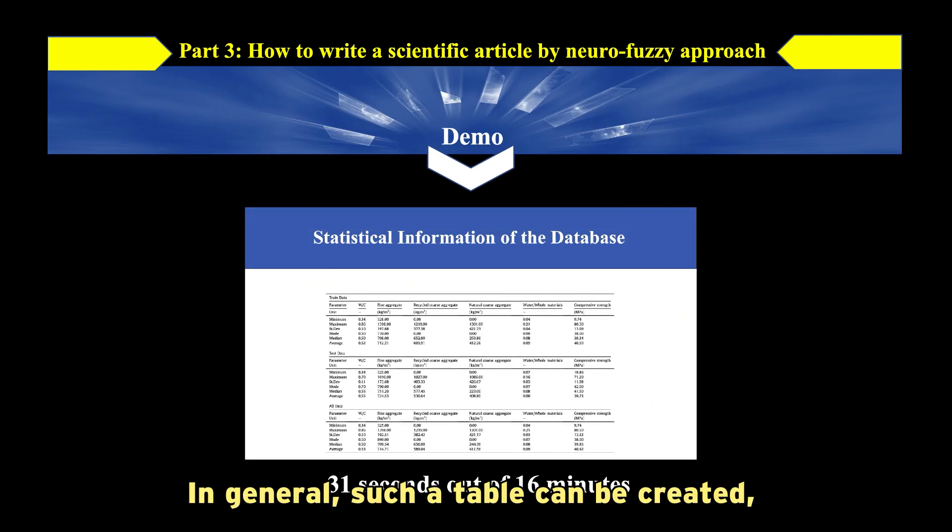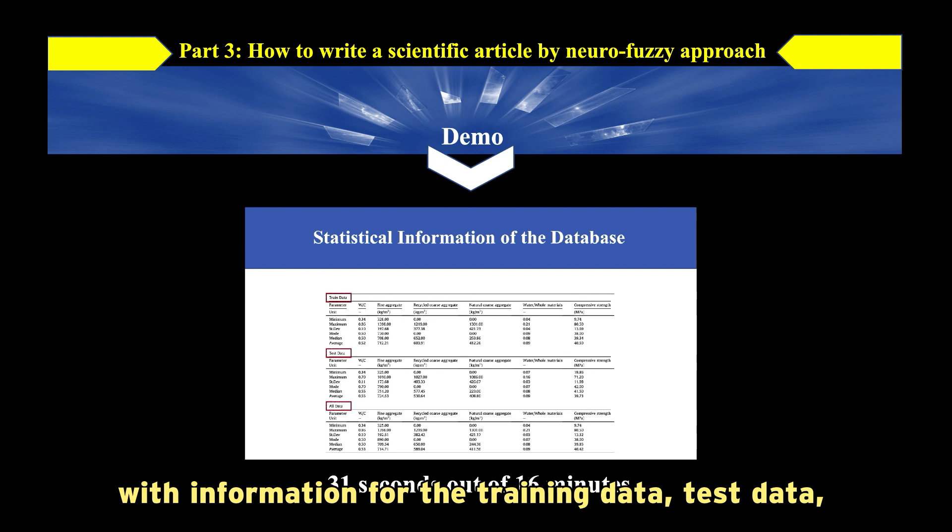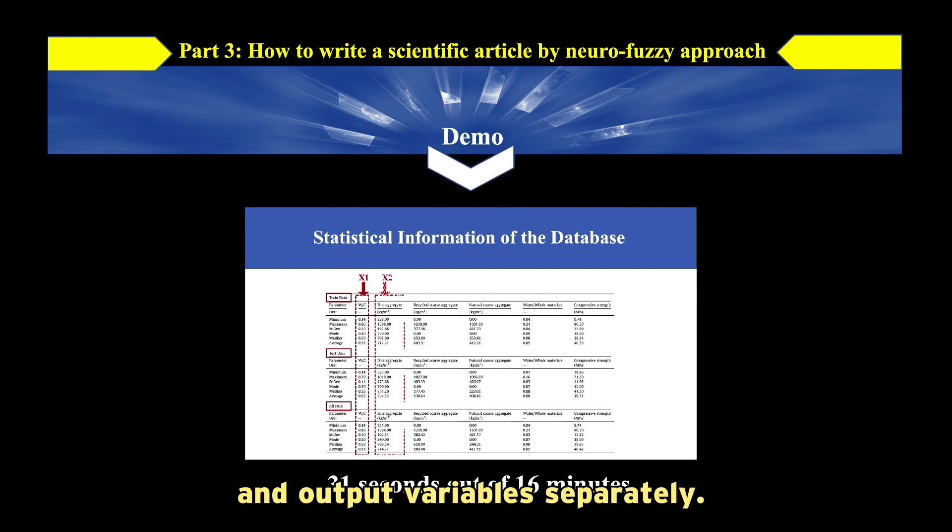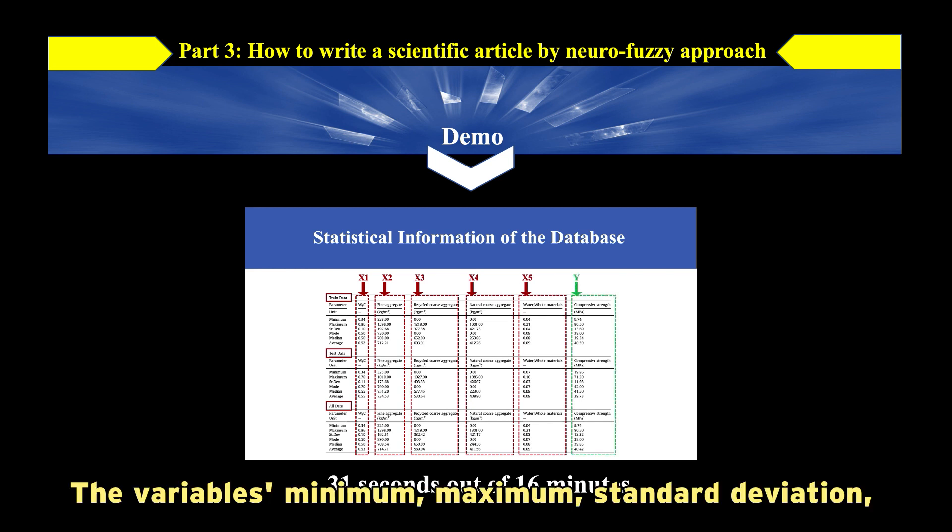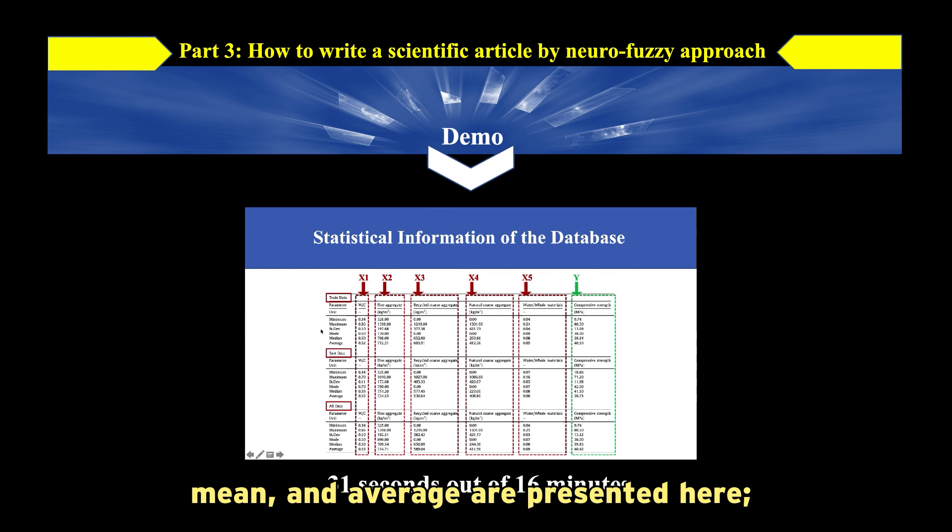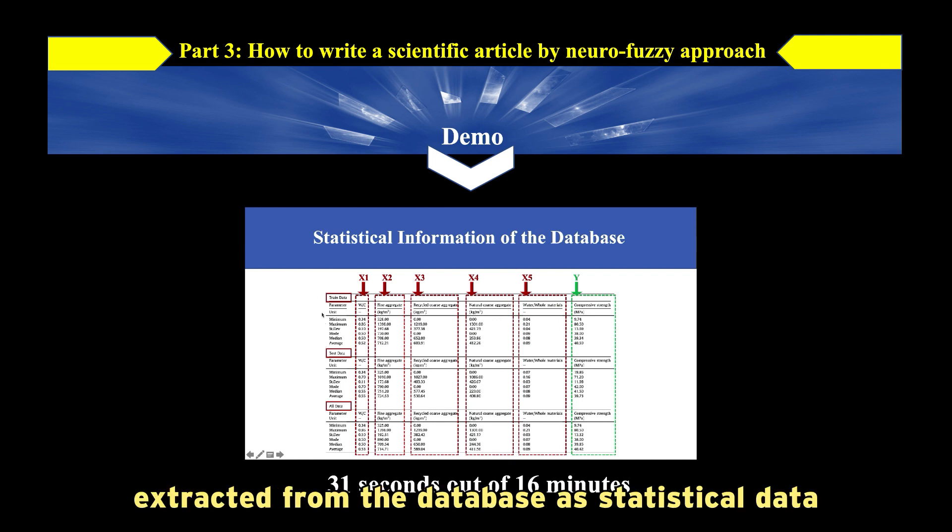In general, such a table can be created with information for the training data, test data, total data, and each of the x variables and output variable separately. The variables' minimum, maximum, standard deviation, mean, and average are presented here. These parameters are typically extracted from the database and statistical data.